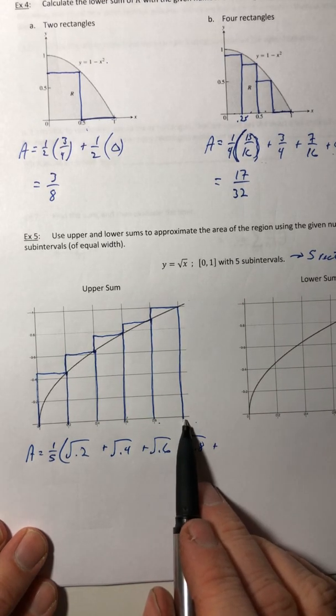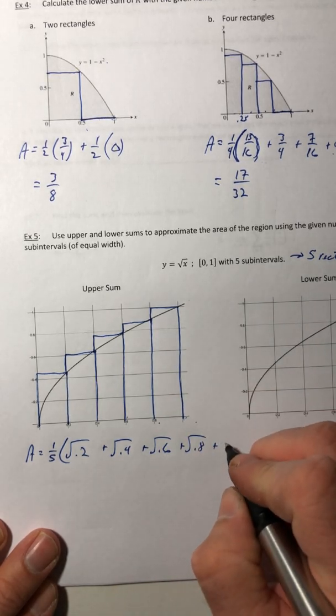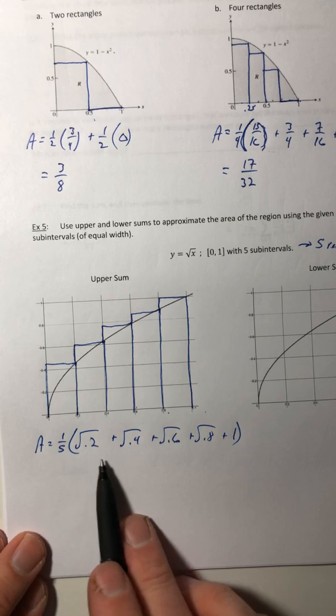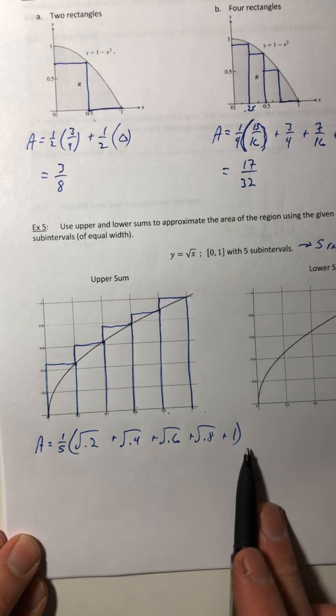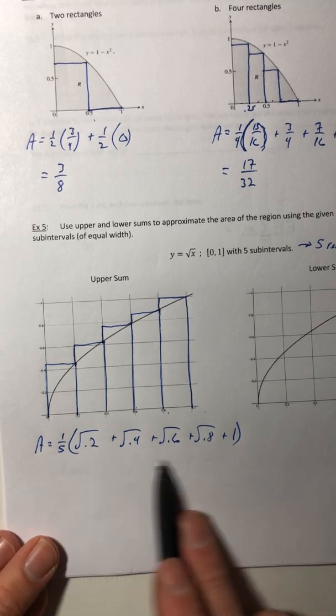And then plus, now you can finally plug in the last one, which is one square root of one is one. And if we add calculators, we can keep going with this and get decimals. But since you don't have one, you just leave it like this.